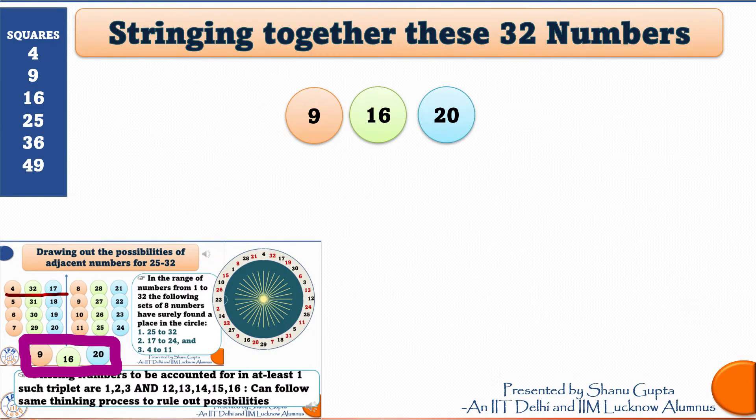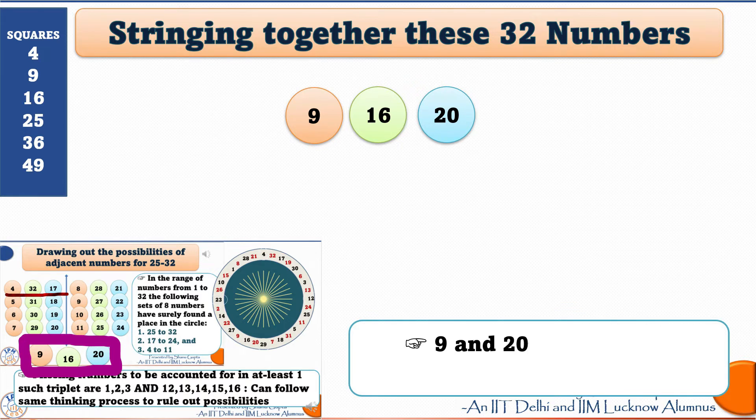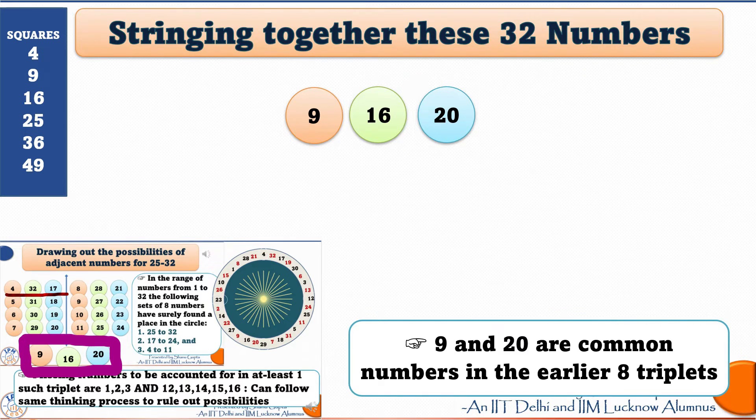Now, I will hide my original circle again because now I am going to show you how to string together these 32 numbers in a loop. Did you notice that in our last triplet 9, 16 and 20, the numbers 9 and 20 got repeated from our earlier 8 triplets. So, let us keep 9, 16 and 20 in the middle of our string. The number 9 is common here in the triplet 9, 27, 22. So, we extend this string to the left.